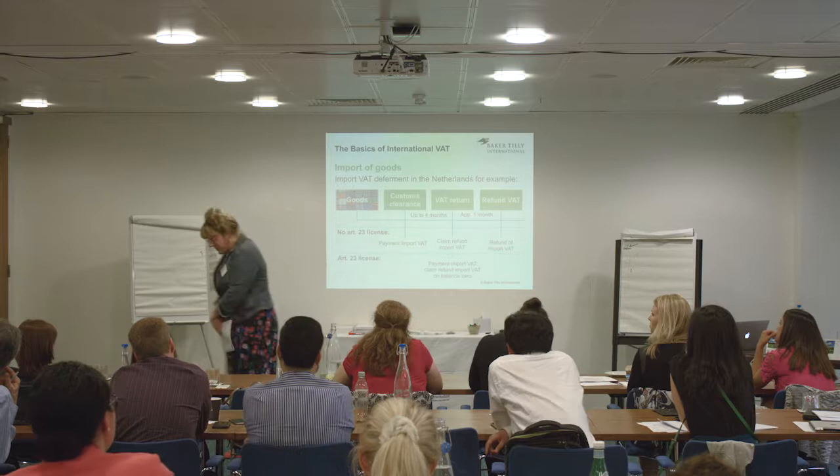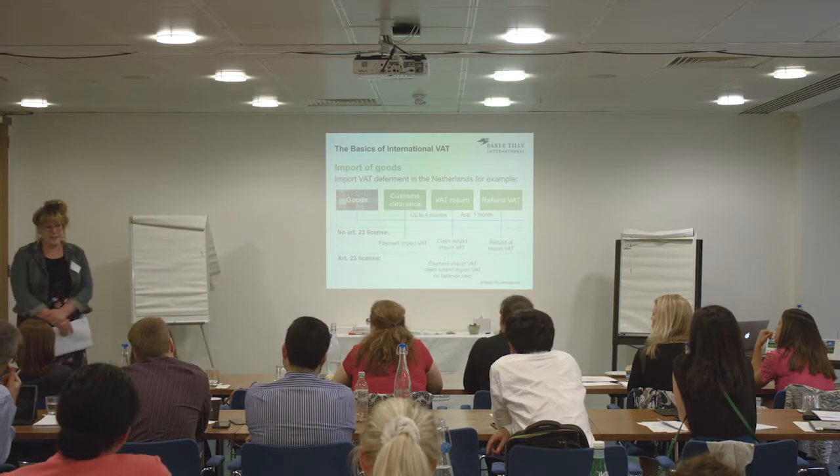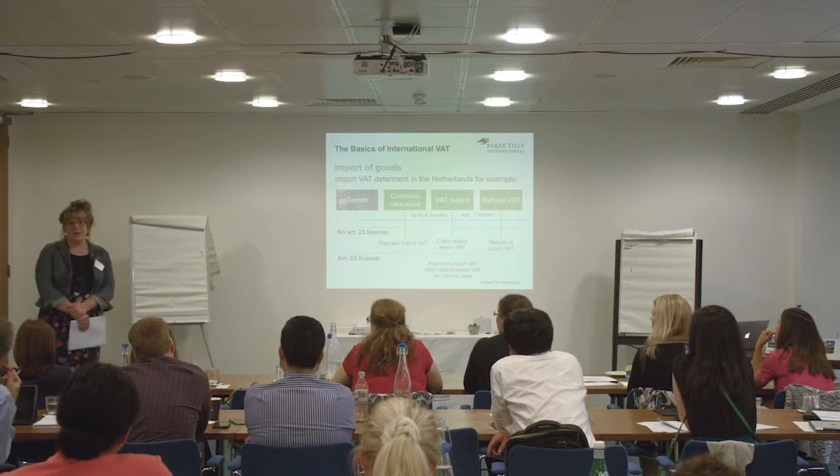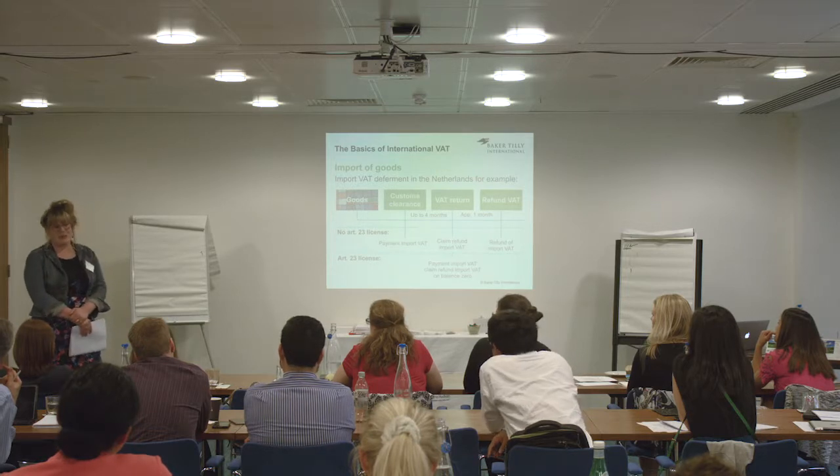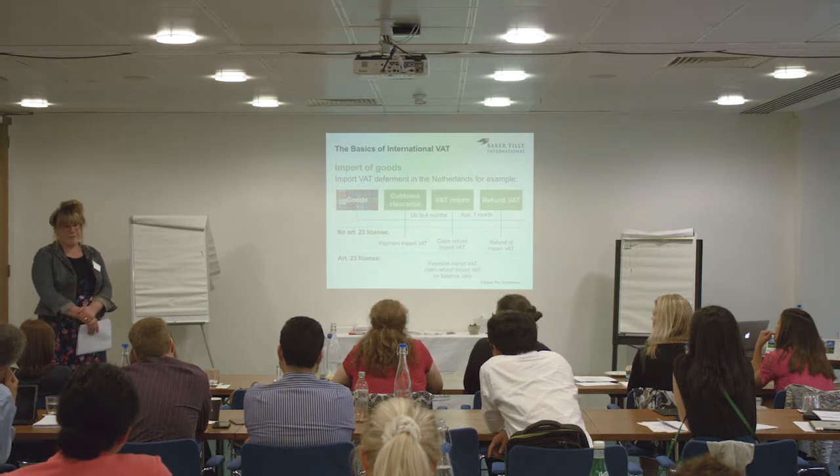There are no thresholds for the license — any company established in the Netherlands can apply. Foreign companies can also apply, as long as they appoint a fiscal representative: a Dutch-established company that acts as their fiscal rep, applies for a VAT number and an Article 23 license. It's similar to a domiciliation service. We have one major multinational client importing 20–30 million euros per month who cannot afford to pre-finance that amount.